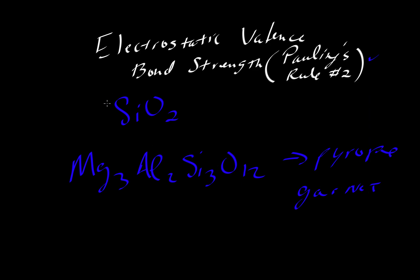The difference here is that when we looked at silica we just had one cation to concern ourselves with. Here we have a whole host of cations and again these are all bonded to oxygen. So how would Pauling's second rule, the idea of electrostatic valence bond strength, apply to garnet?